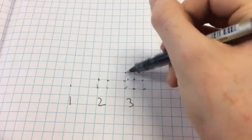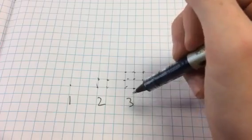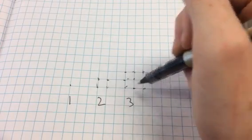Now I count all the dots: one, two, three, four, five, six, seven, eight, nine. And that's the third square number.